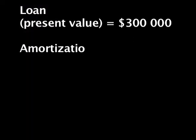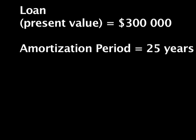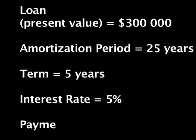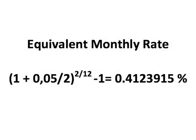Check out my video on the topic for more details. Let's look at an example. Let's say you borrow $300,000 to buy a house. The amortization period is 25 years, the term is five years, and the interest rate is 5%. First, you must find the equivalent monthly rate by applying this formula, which gives you 0.4123915%.